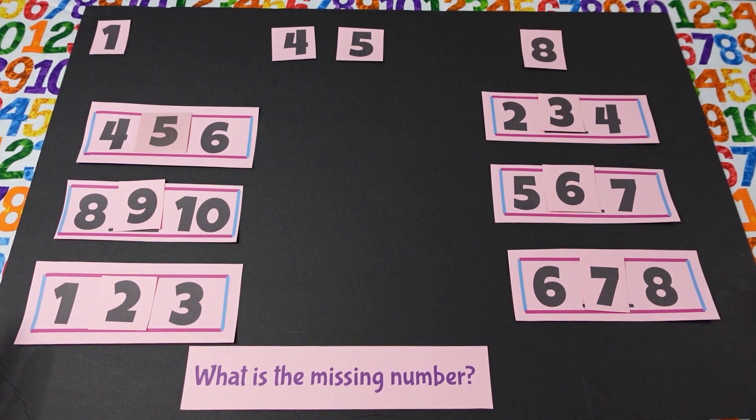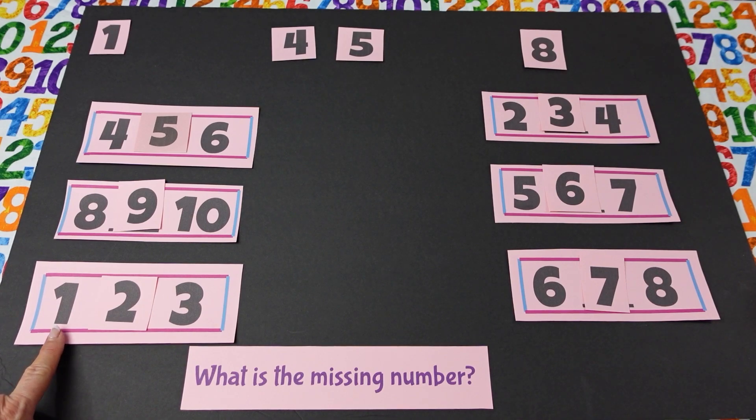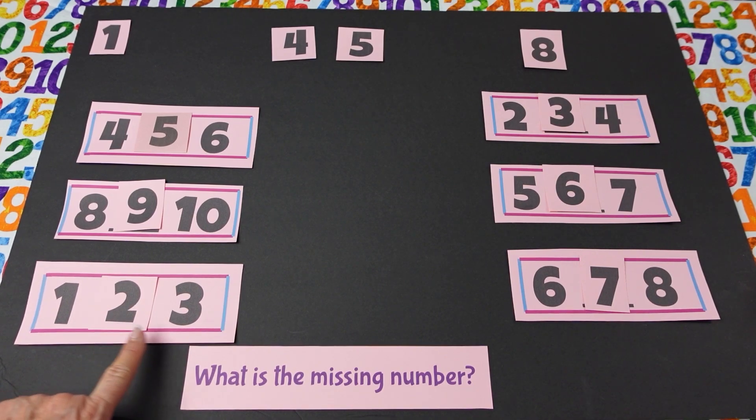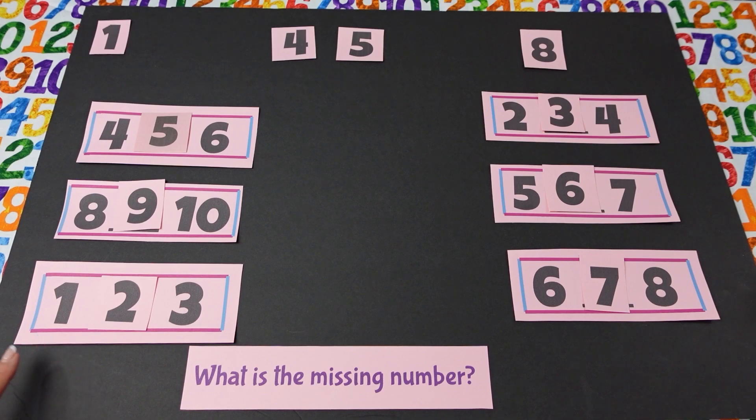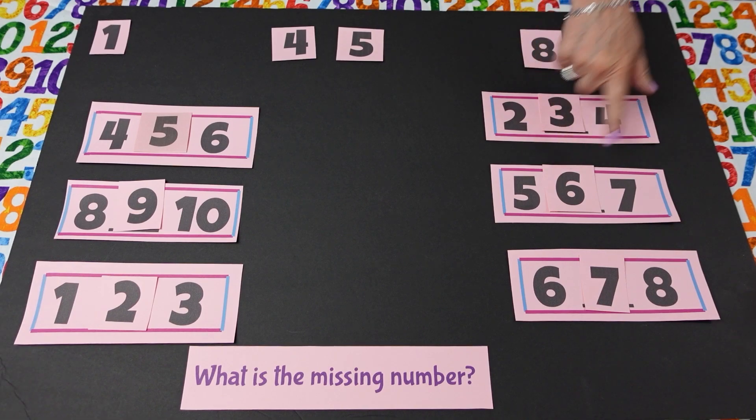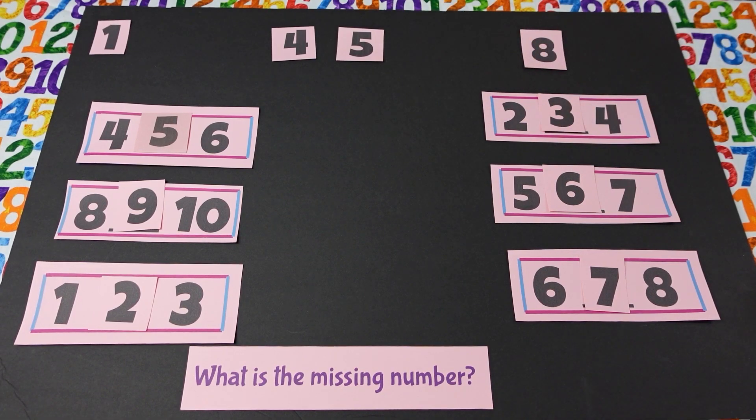Jonathan, can you read these three numbers? One, two, three. Isabella, can you continue with this one? Four, five, six. Good. Jonathan, can you read this? Six, seven, eight. There you go. Okay. Isabella, can you do this one? Five, six, seven. Good.